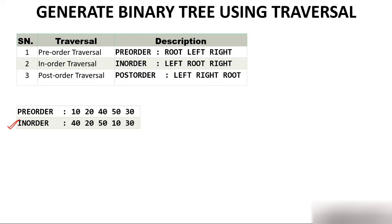Let's start with creating a tree. I don't know what will be my tree, but as I've told you earlier, the first element of pre-order is root. I don't know what will be my tree, but I know one thing very clearly: my root is 10. Whatever may be the tree, root will be 10.